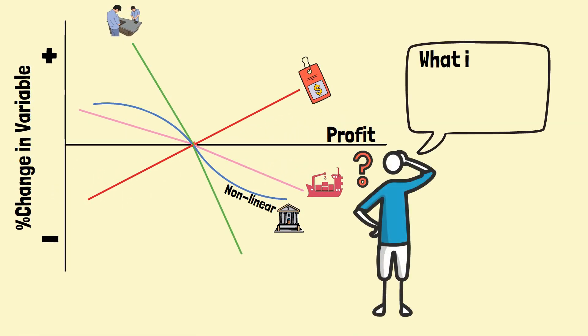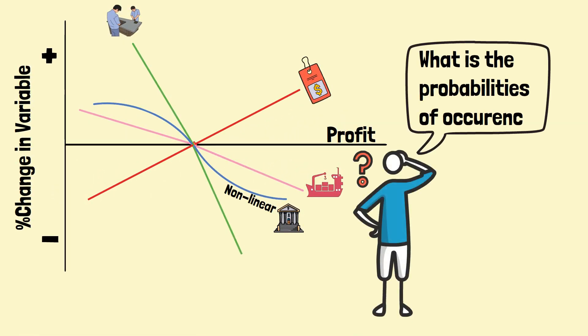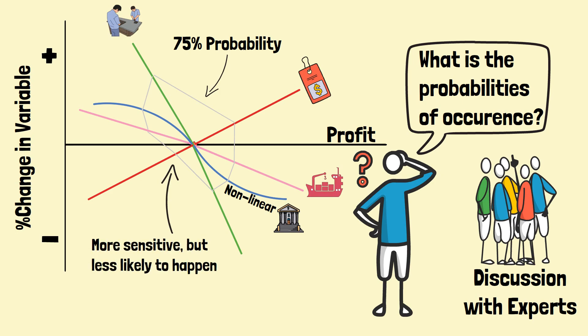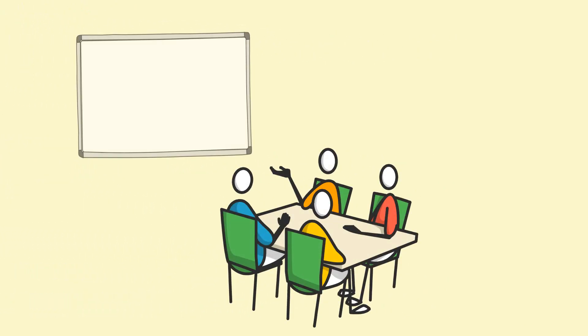The likelihood of the occurrence of the variation may be of interest to John. He can then get the views of a few experts to incorporate the probability contours onto the SPIDER diagram. The contour will show that certain variables with higher impact may be less of a concern versus others, mainly because the probability of occurrence is lower. John can then present the SPIDER diagram to the shareholders and discuss the potential impact on profit by different factors.